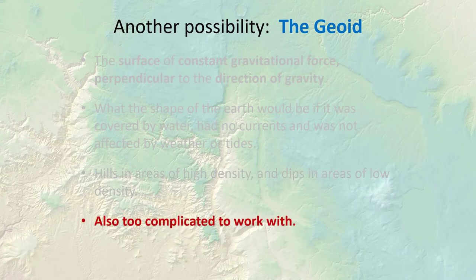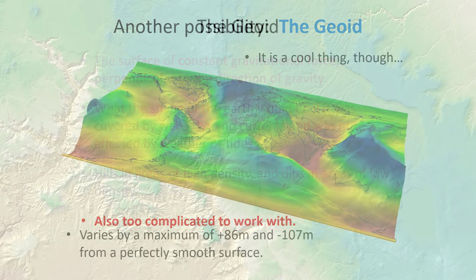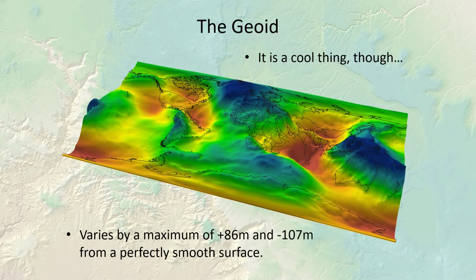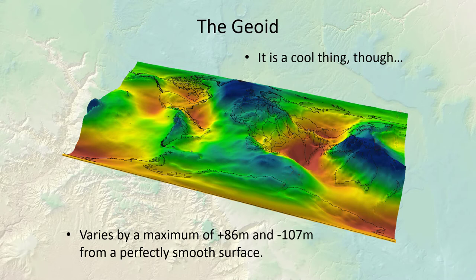The geoid is also really complicated to work with — not quite as complex as the true topographic surface, but still pretty rough. A map shows how the geoid changes across the planet; there's an area of very low density south of India and high density north of Australia, meaning the actual ocean surface rises by almost 200 meters between those points. We don't usually deal with the geoid much in GIS, but most GPS systems have an option to use the geoid when calculating elevation — which is elevation above mean sea level.